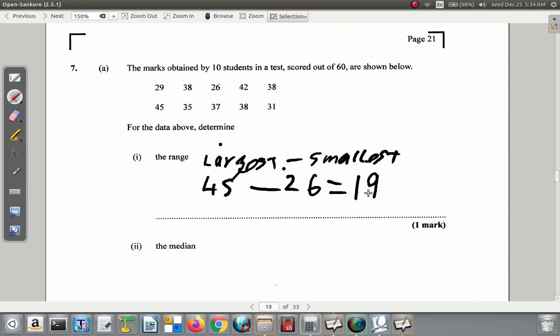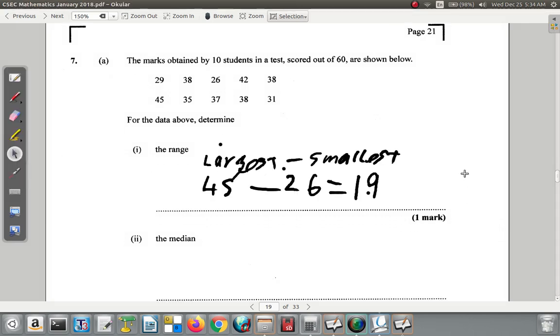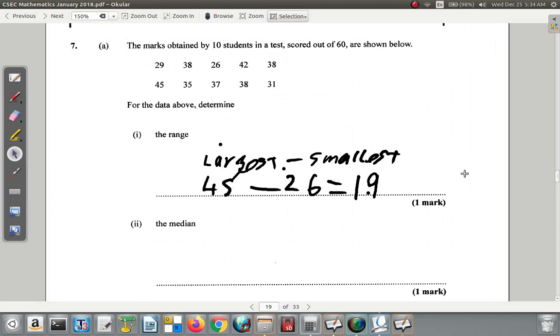Then they ask for the median. Now remember, the median would be the middle number. You get that if you have an odd number of items, an odd number of values. But if you have an even number of values, then there will be two in the center. And that's after you arrange them in order.